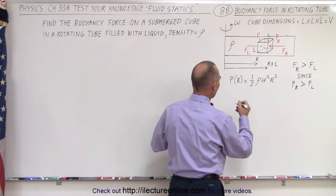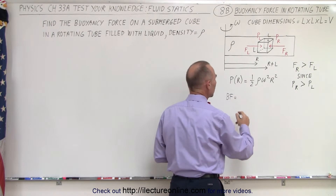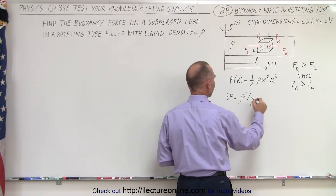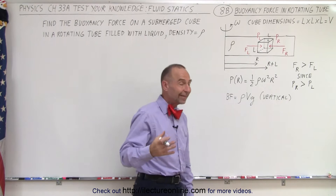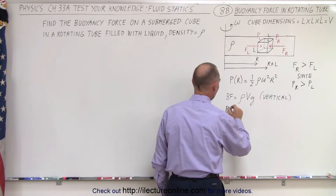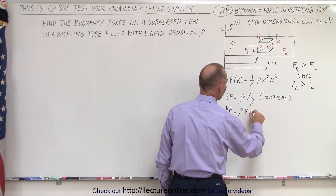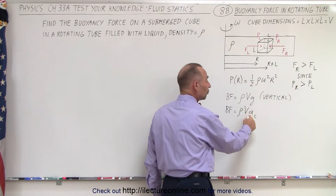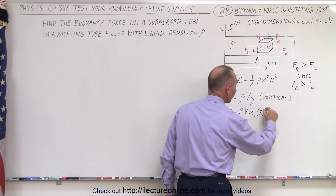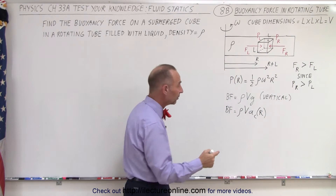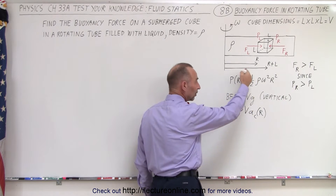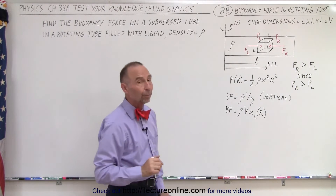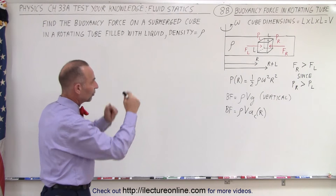Remember, on the vertical axis the buoyancy force is equal to the weight of the displaced liquid, which is density times volume times g — but that is in the vertical direction. In the horizontal direction, the buoyancy force would analogously be rho times volume times centripetal acceleration. That is indeed correct; however, g is a constant whereas centripetal acceleration is a function of r. That's why we must first find the pressure using an integral, since centripetal acceleration is not constant, and from that we find the buoyancy force.